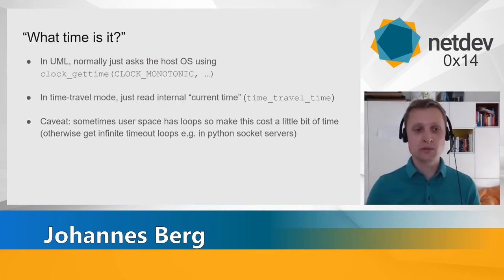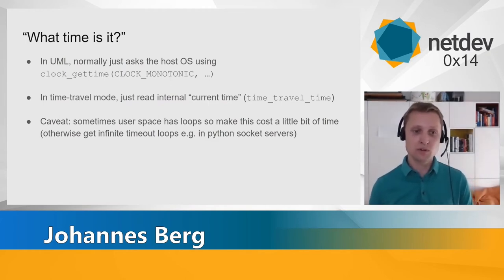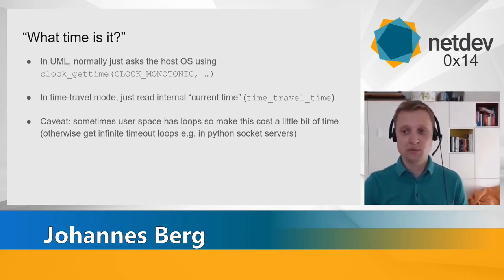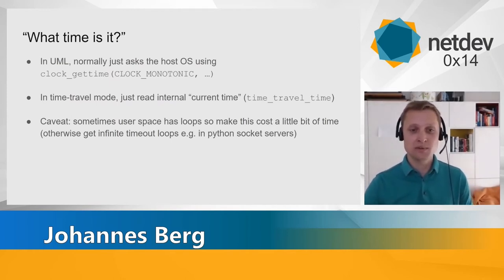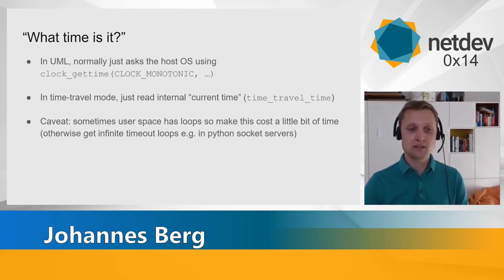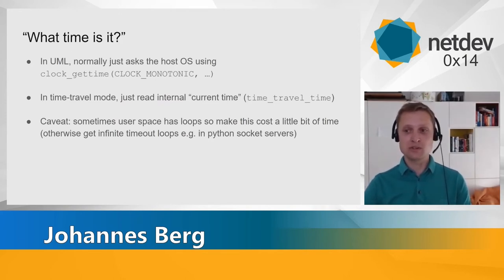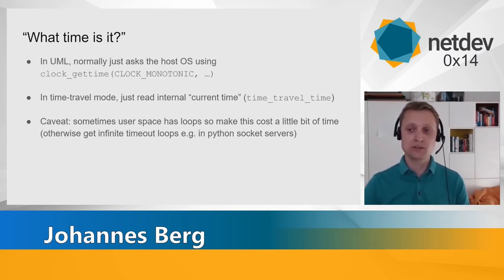So how do we implement all four? First, what time is it? Normally in User Mode Linux, this just calls clock_gettime on the host. In time travel mode, it's even simpler — we just read the current internal time, which is a u64 tracking current time in nanoseconds. We do make this cost a little bit of time due to boundary conditions in some user space applications.